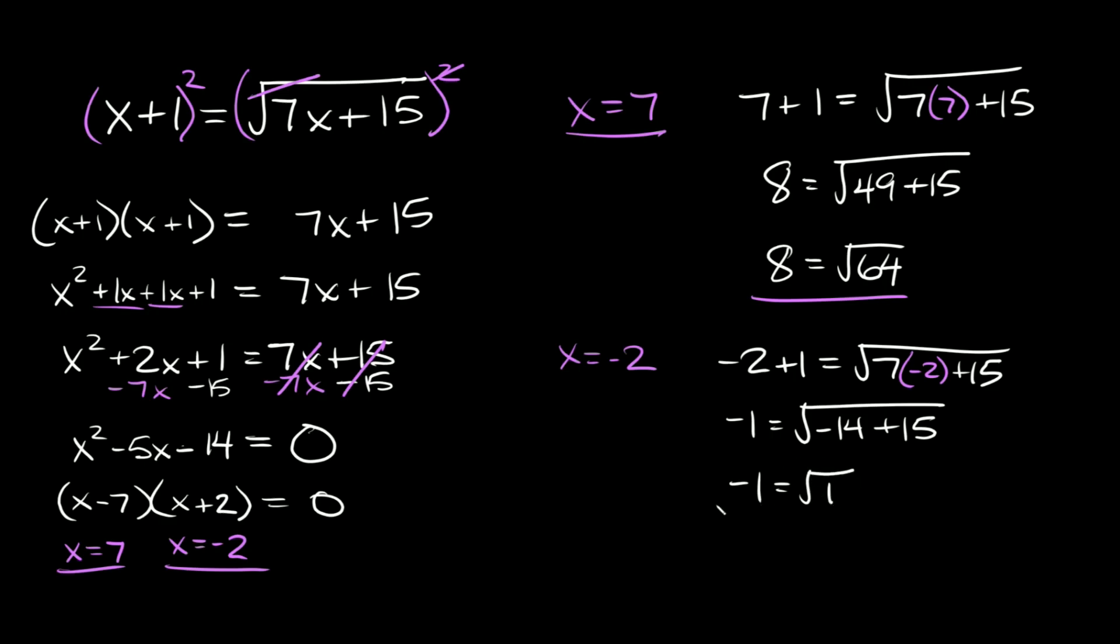Now here this is obviously not a true statement. The square root of 1 is equal to positive 1, not negative 1. So then here x is equal to negative 2, we would call an extraneous solution. And it's extraneous because it was one of our solutions over here, but when we plugged it in back into our equation to test it, it didn't actually work. So that's why we call this an extraneous solution.